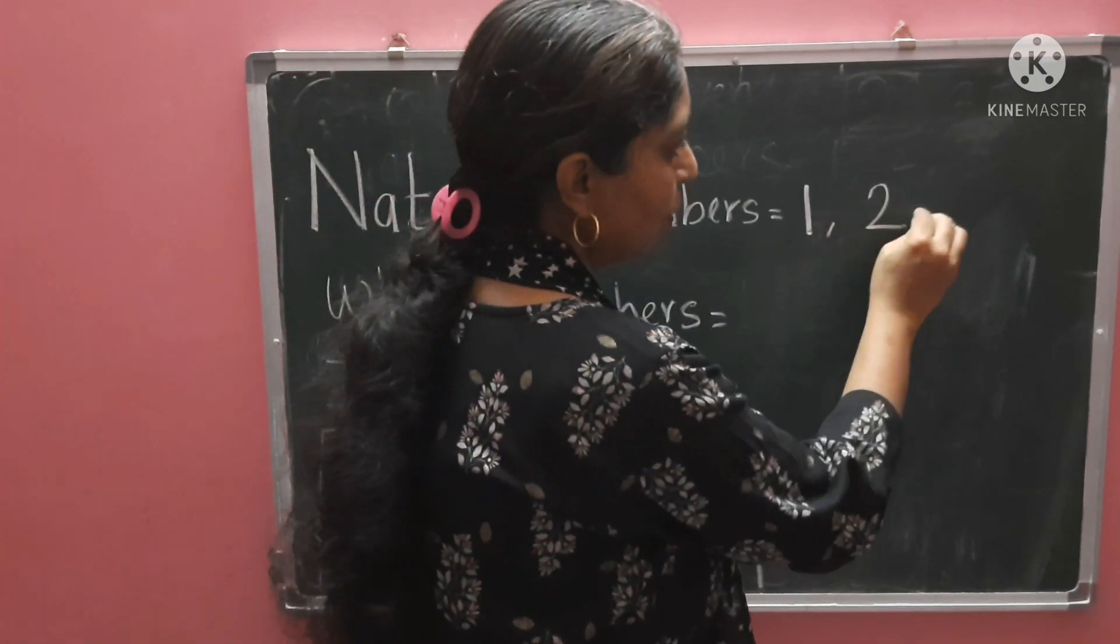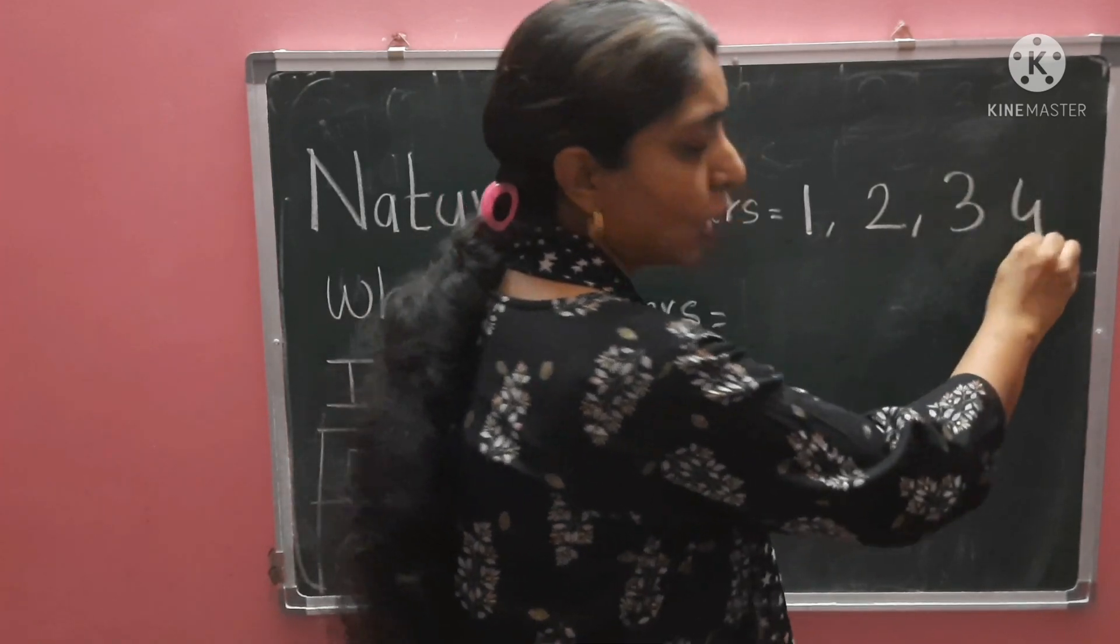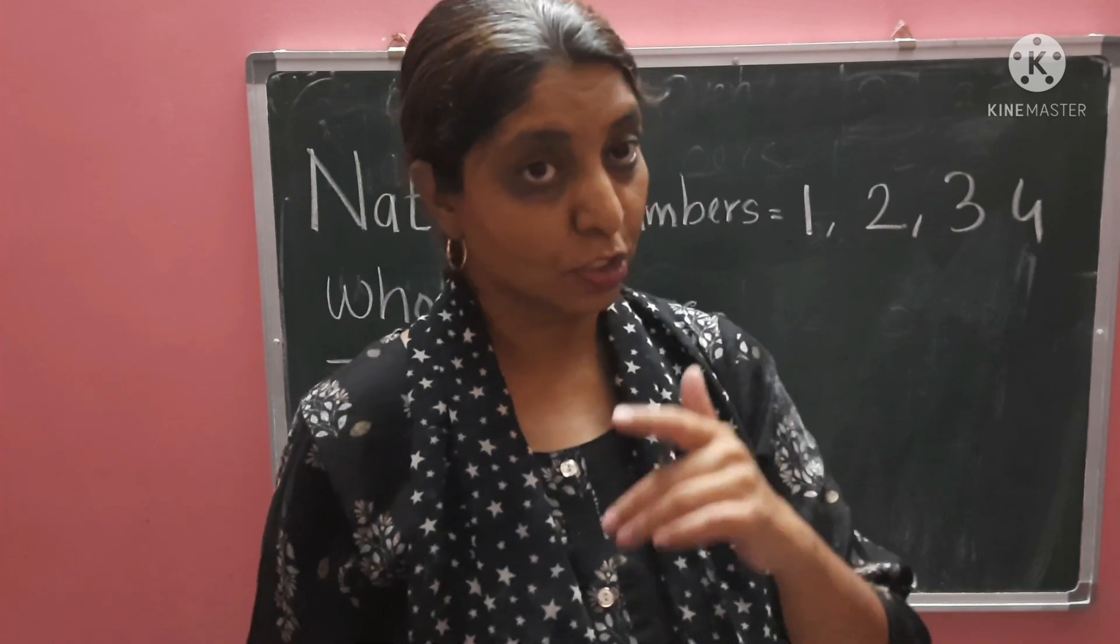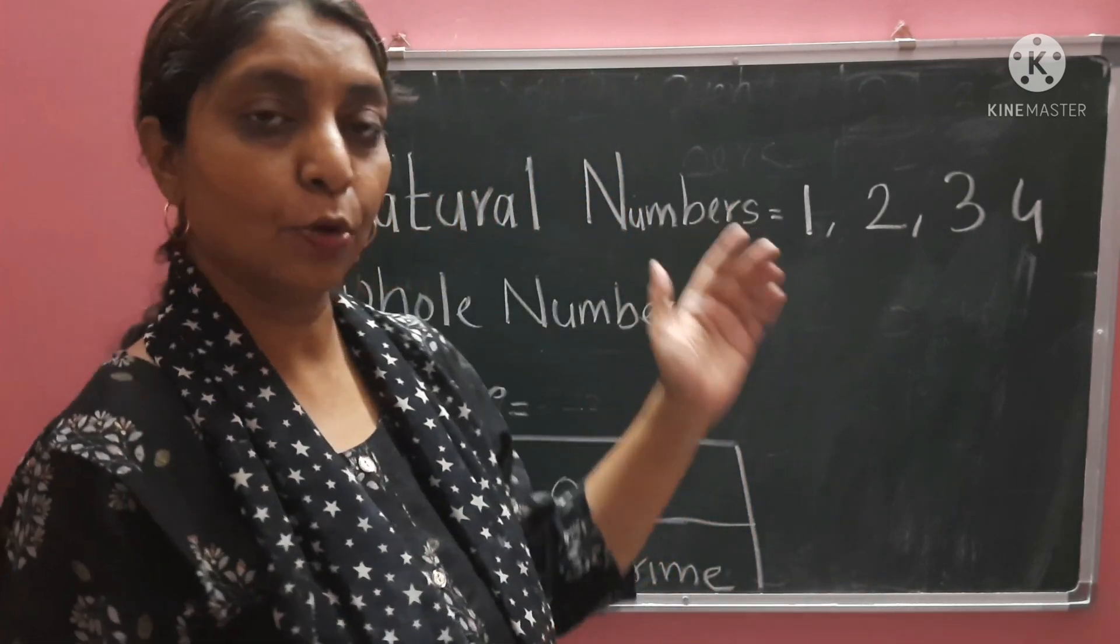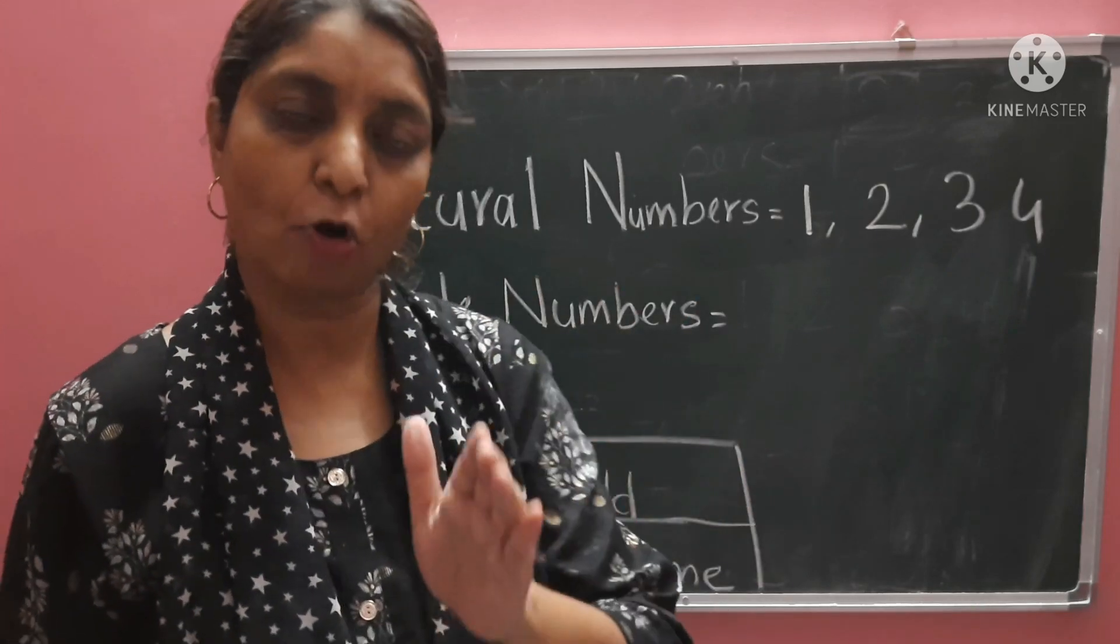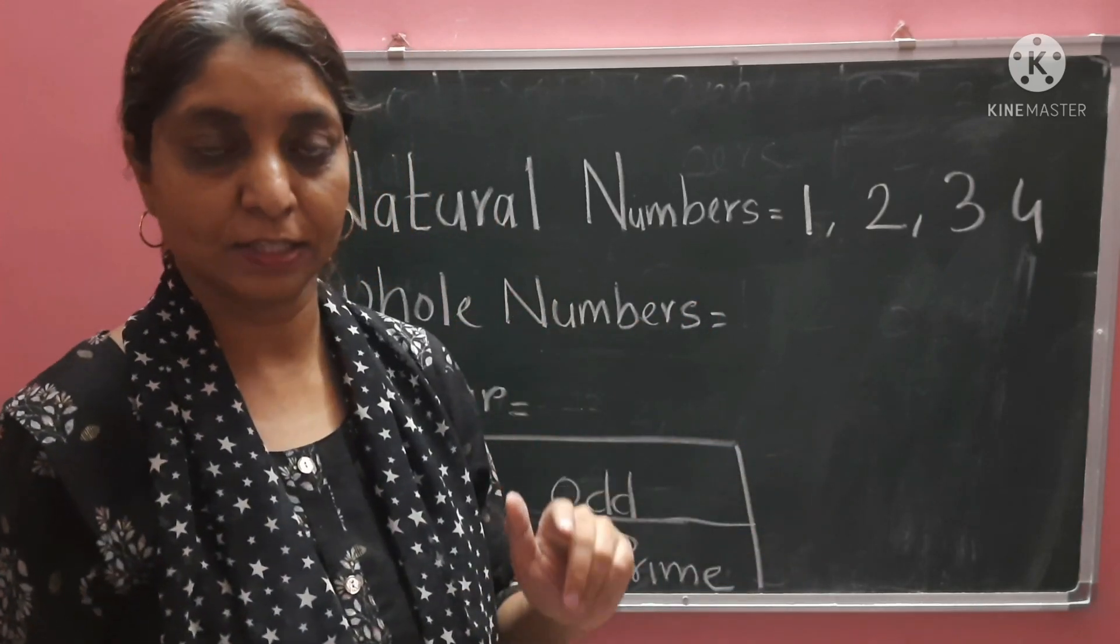One, two, three, four. And her counting started until she counted all the trees. So, from where we count objects, the numbers we use to count objects are called natural numbers.